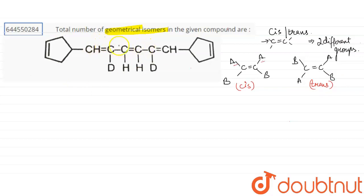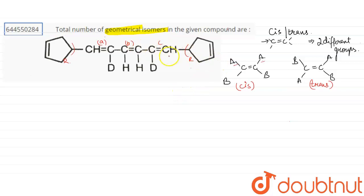In this structure, we have three double bonds — let me name them A, B, and C. For simplicity, I'm going to name this terminal group as R. Both end groups are the same R group.